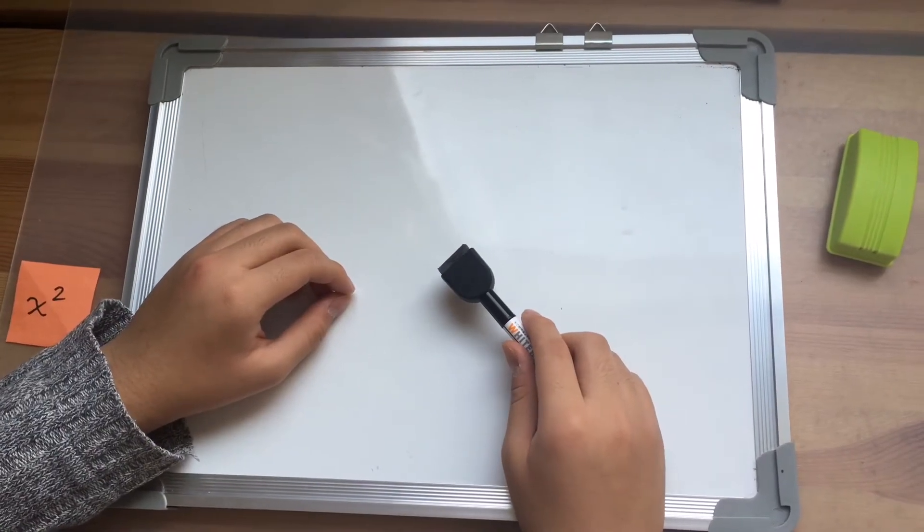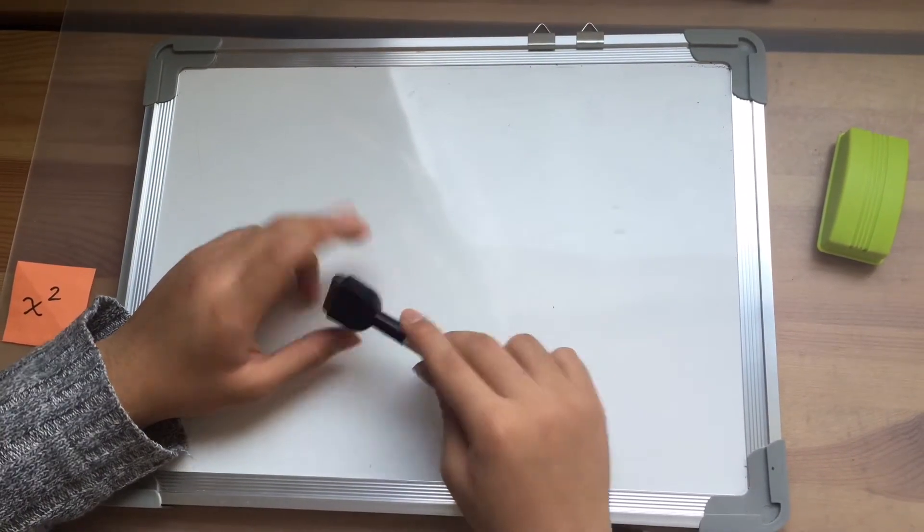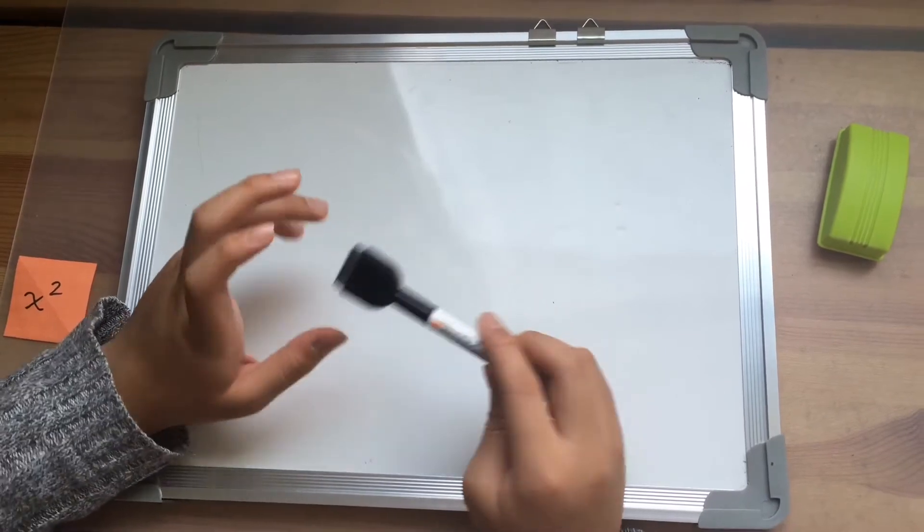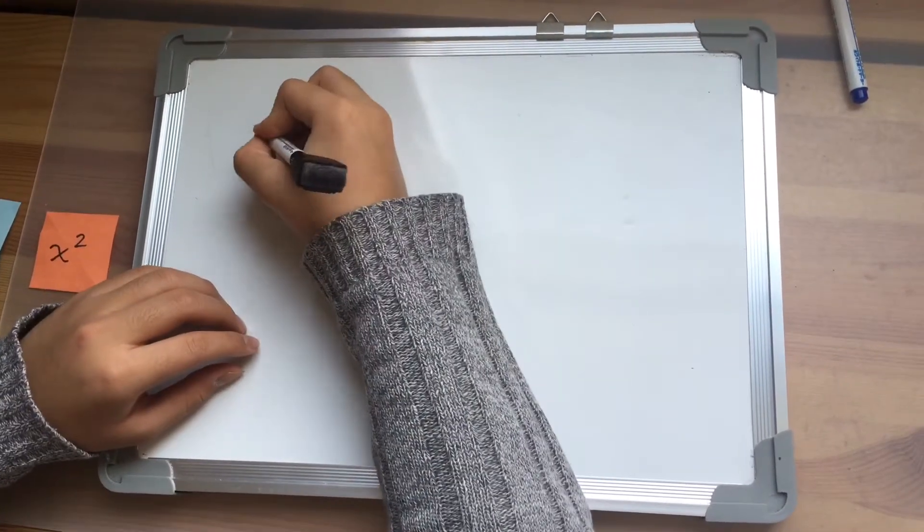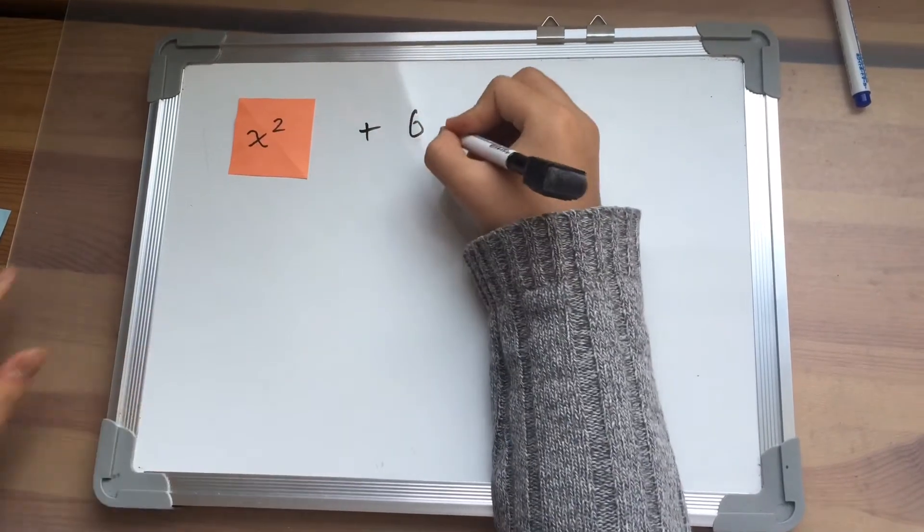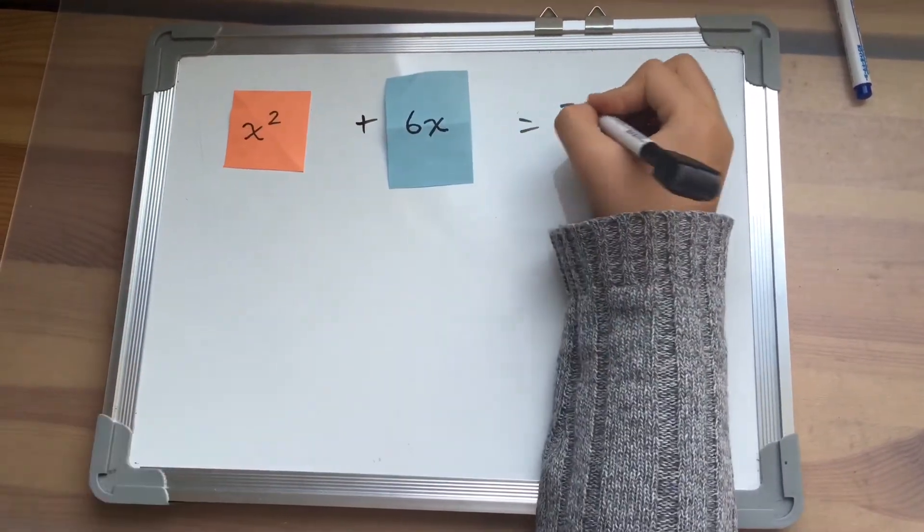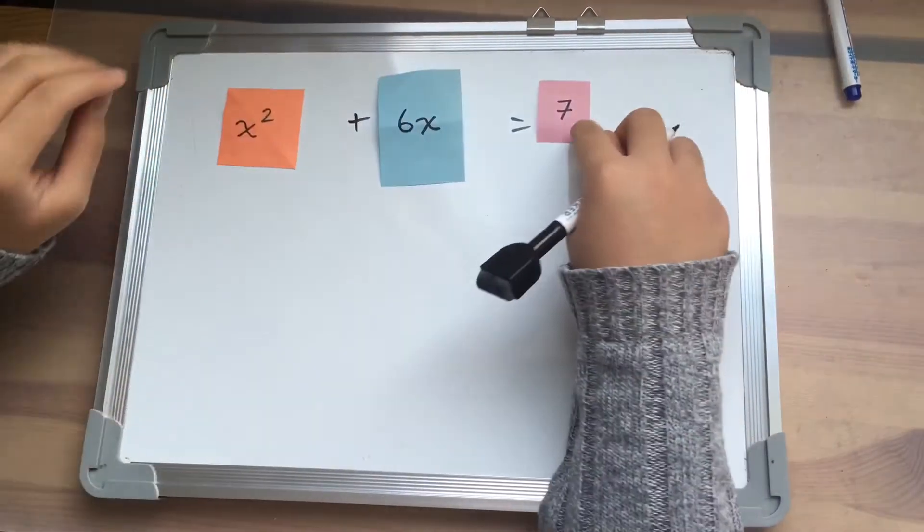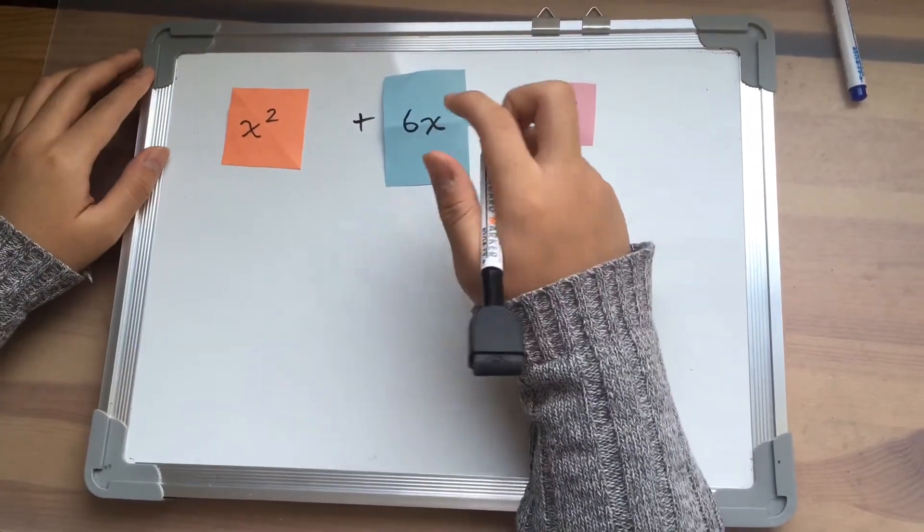Today, I will explain how to complete the square visually so it can be more understandable. x squared plus 6x equals 7 is the quadratic equation that I will complete the square on.